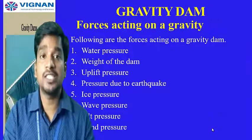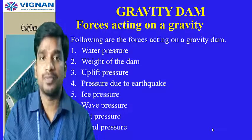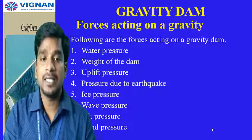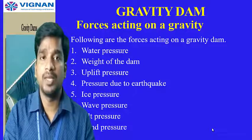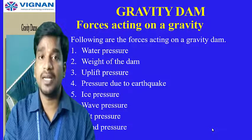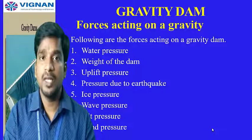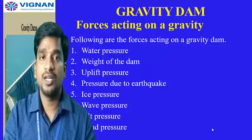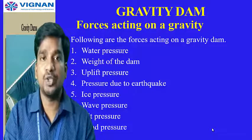Now let us look at the different forces acting on a gravity dam, all of which are resisted by the dam's own weight. The forces are: water pressure, weight of the dam, uplift pressure acting on the surface and foundation, pressure due to earthquakes, ice pressure, wave pressure, silt pressure, and wind pressure. These are the eight kinds of forces acting on a gravity dam.